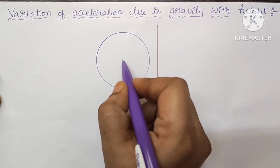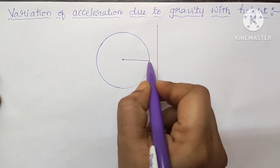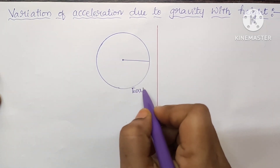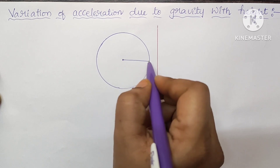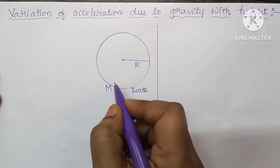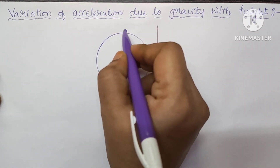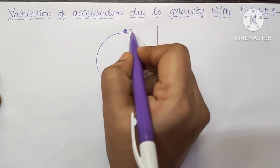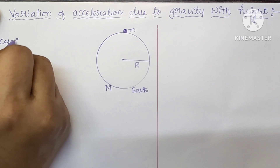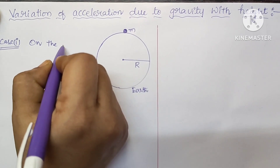First I will explain what is the acceleration due to gravity variation when the object is considered on the surface. Let it be Earth, with the center of Earth marked. Capital R is the radius and capital M is the mass of the Earth. Now let us consider one small object on the surface of the Earth whose mass is small m. So I will consider this as Case 1 — an object on the surface of the Earth.